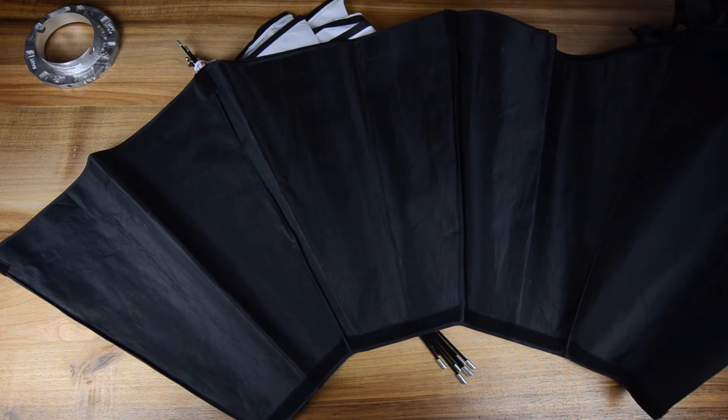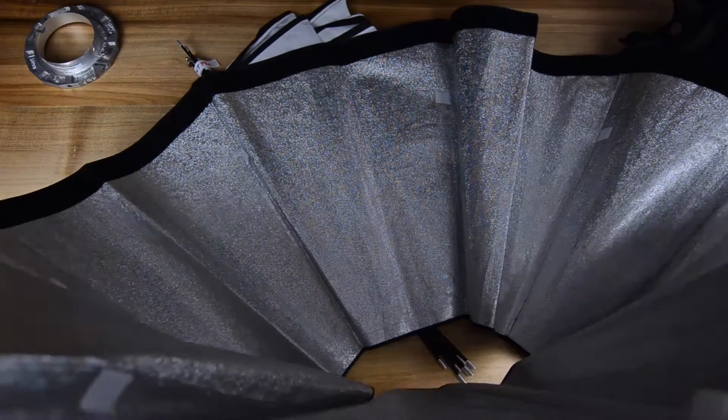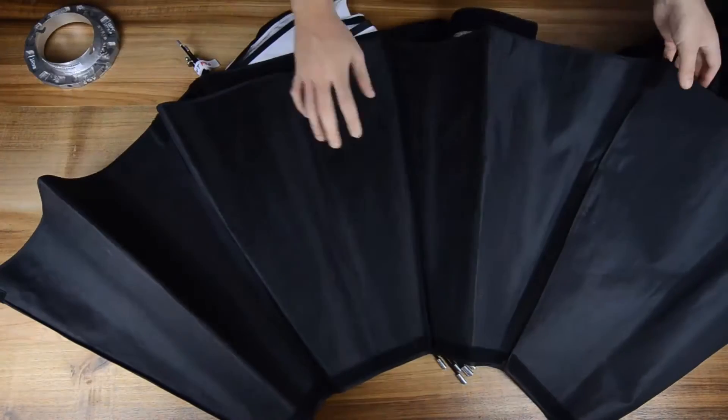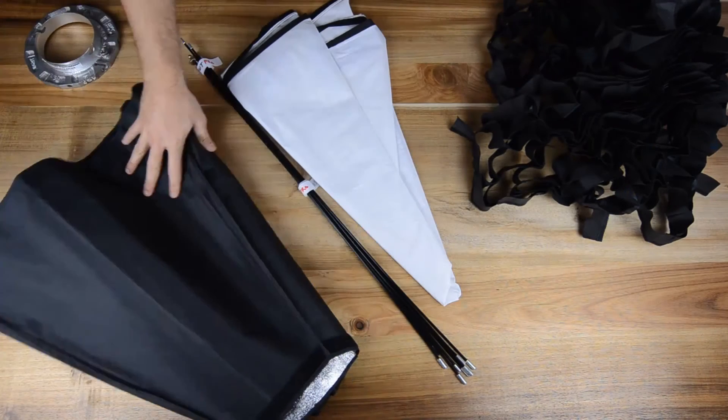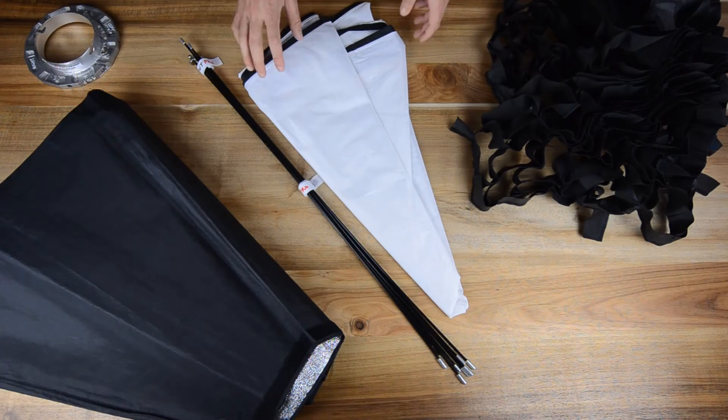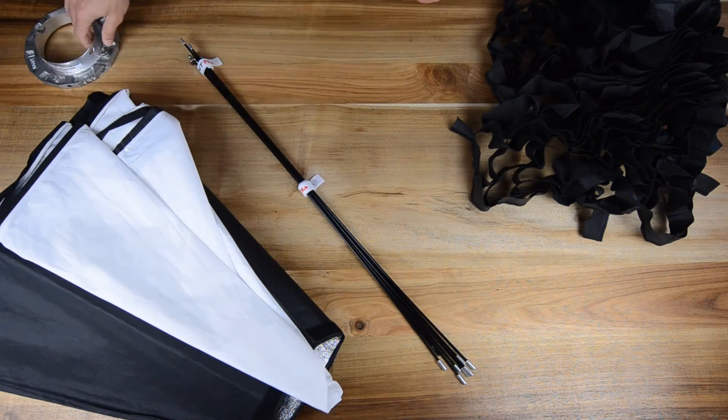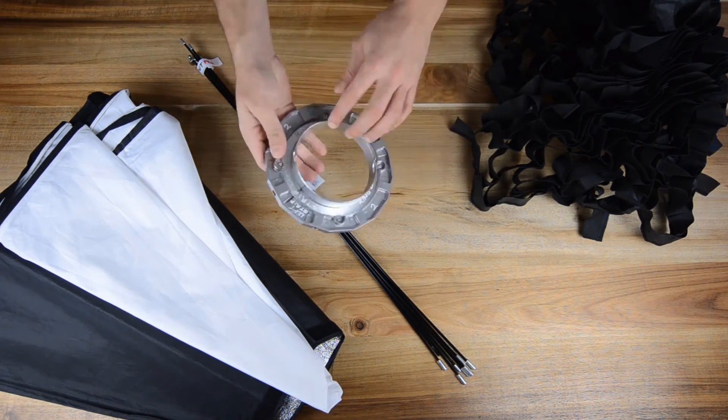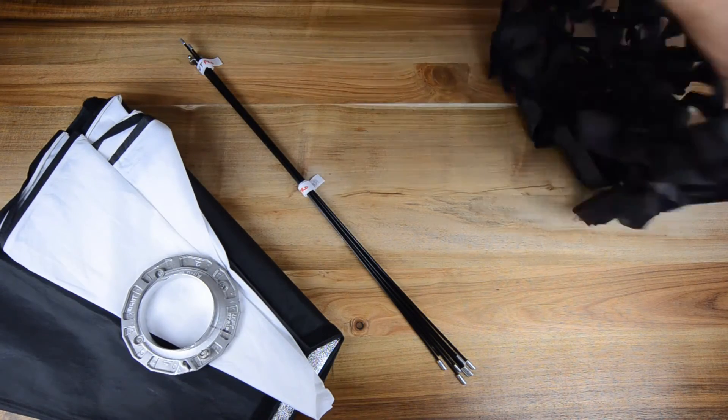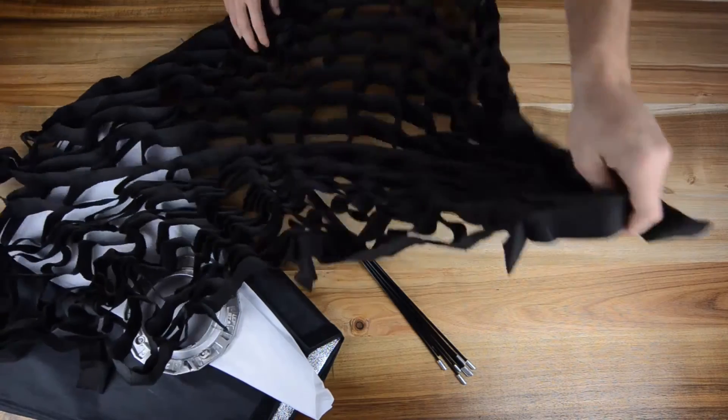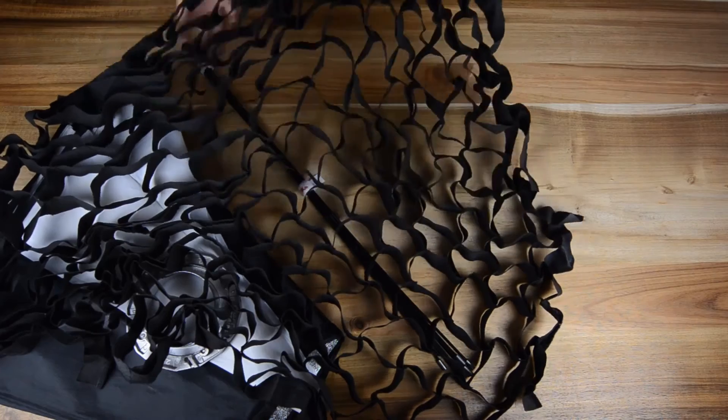Then over here we have softbox number six which is an octabox, also pretty big. Over here you guys can see it's silver inlining. So it's super huge. We use it as a fill or front light, the key light sometimes. Comes here with diffusing material and a few rods, also the Elinchrom mount for the speed ring. Then over here which is really nice, a big huge grid system for the softbox, and we sometimes try to catch our assistants with this.